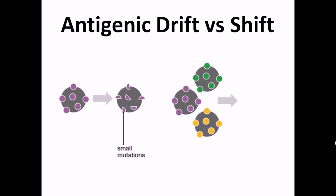Antigenic shift occurs on a much larger scale. Let's say there are three different strains of viruses with different types of hemagglutinin — green, purple, and yellow. In antigenic shift, a particular cell is infected by two or three different strains of the same virus. Those viruses exchange genetic material and combine it to produce a completely new strain — for example, one containing all three kinds of hemagglutinin spikes. This new virus is much stronger since antibodies against it won't always be effective. In antigenic drift, only small mutations occur without a change in strain; in antigenic shift, a completely new strain is generated.